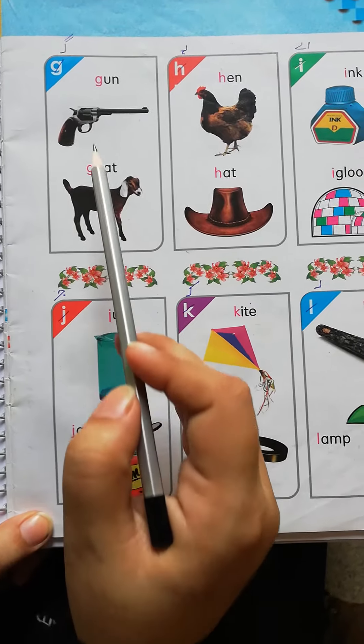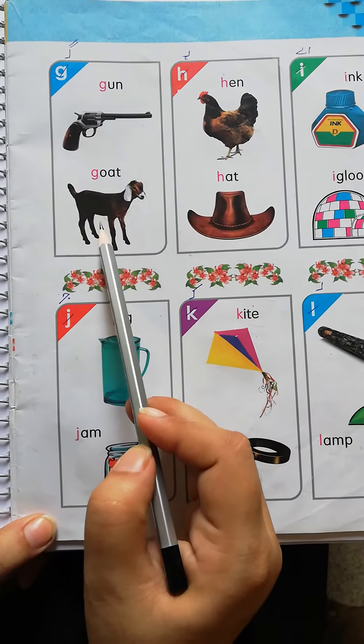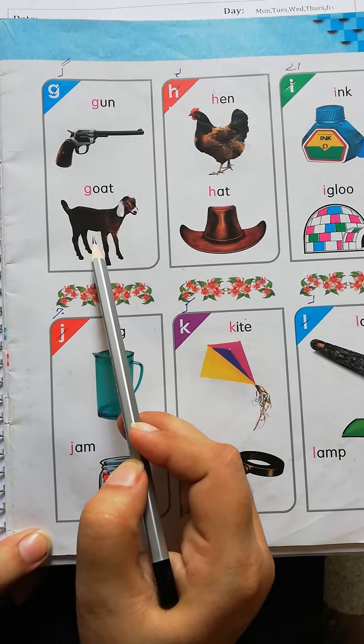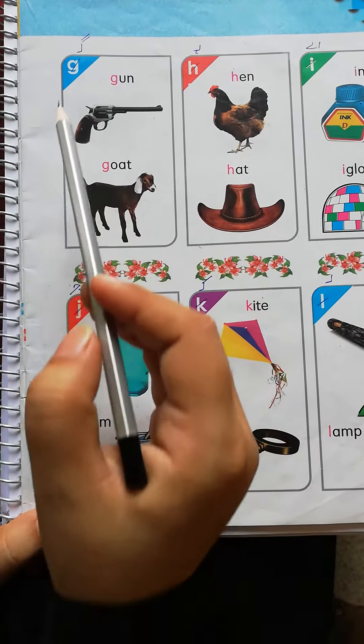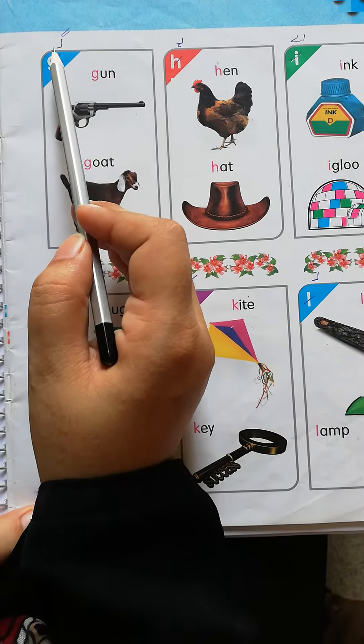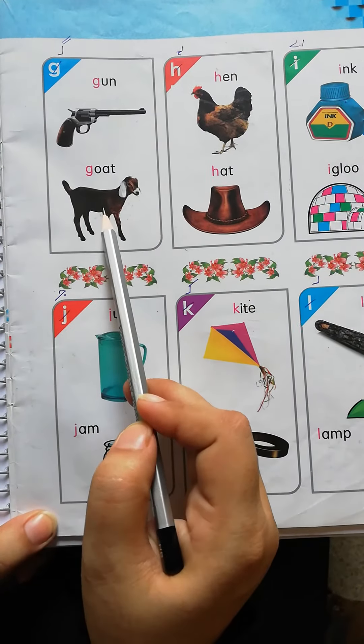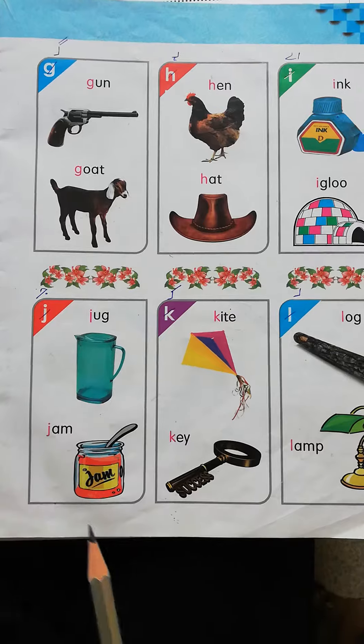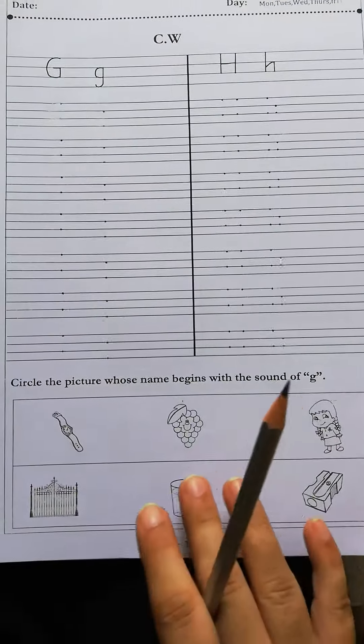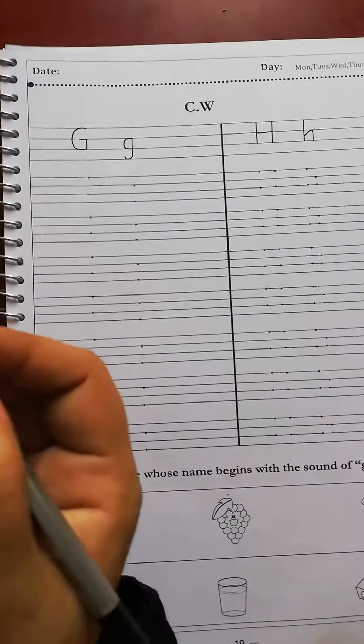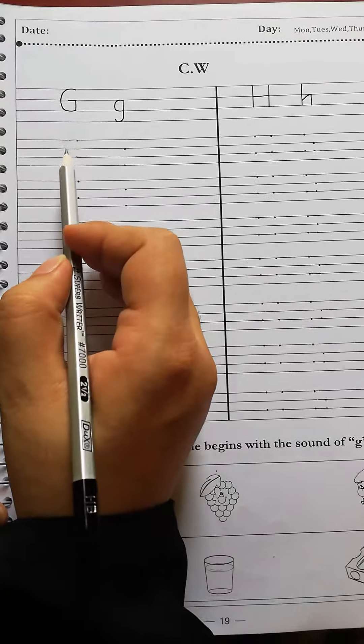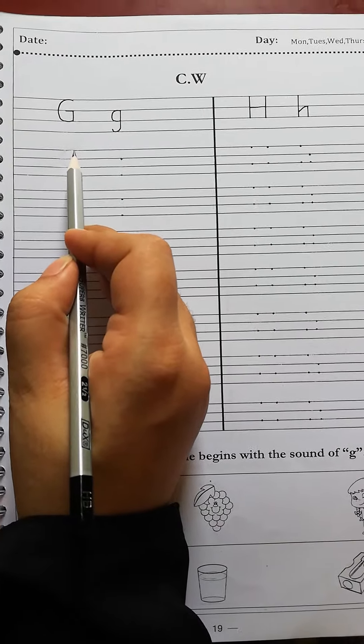When we pronounce these objects, the beginning sound is G. Now we read it with sound: G gun, G goat. Students, now we will write capital G and small g. First of all, we put the pencil on this one dot.